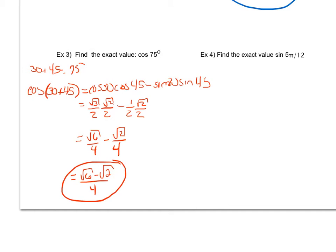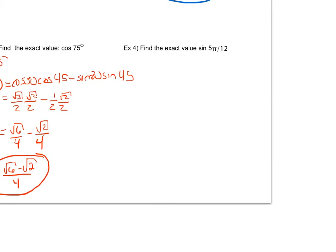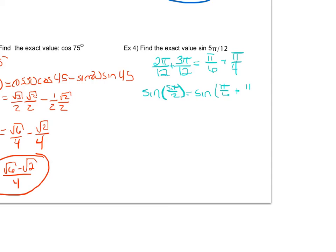Now let's look at one final example: sine of 5π/12. Again I ask myself what adds or subtracts to be 5π/12. I know that 2π/12 plus 3π/12 would add up to 5π/12. Now I reduce to check: 2π/12 reduces to π/6, and 3π/12 reduces to π/4. Both are on my unit circle, so sine of 5π/12 becomes sine of π/6 plus π/4.